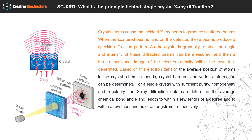Based on this electron density, the average position of atoms in the crystal, chemical bonds, crystal barriers, and various information can be determined. For a single crystal with sufficient purity, homogeneity and regularity, the X-ray diffraction data can determine the average chemical bond angle and length to within a few tenths of a degree and to within a few thousandths of an angstrom, respectively.